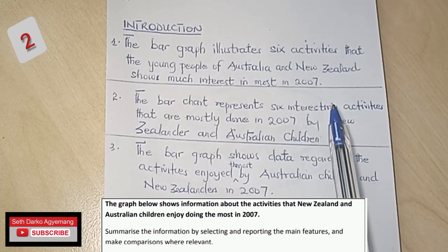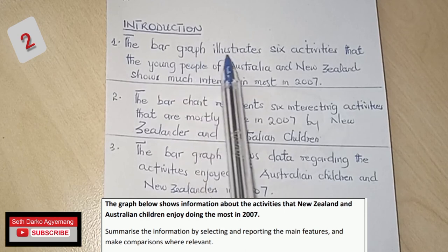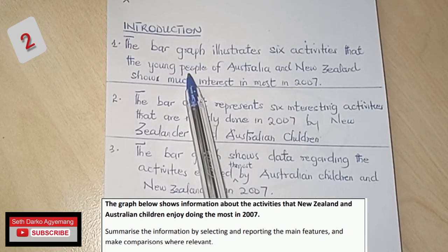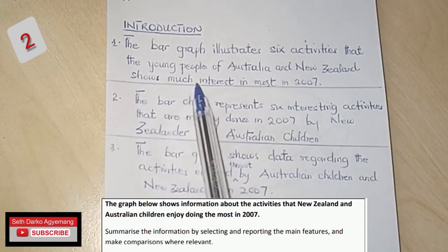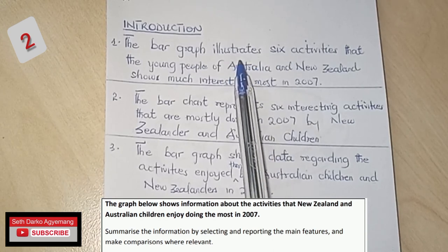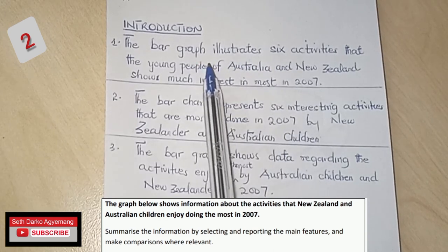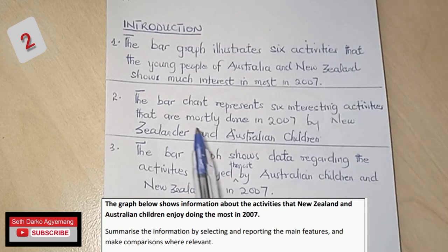That's why I added 'six activities' — I'm paraphrasing by adding information I observed from the diagram. Instead of 'Australian children,' I replaced that with 'young people of Australia and New Zealand.' And instead of 'enjoy doing the most,' I wrote 'show much interest in.' Most of the words from the question have been changed in my first introduction. That is how you paraphrase — change some of the words, but make sure it means the same as the original question.